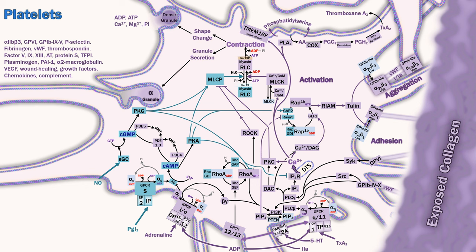Now we can look at the site of action of some antiplatelet drugs. Aspirin has a brief half-life of 15 to 20 minutes, but irreversibly inhibits COX-1, inactivating thromboxane A2 synthesis for the lifespan of the platelet, which is about a week. It is sometimes combined with the phosphodiesterase 3 inhibitor dipyridamole, which functions as a platelet inhibitor and vasodilator.